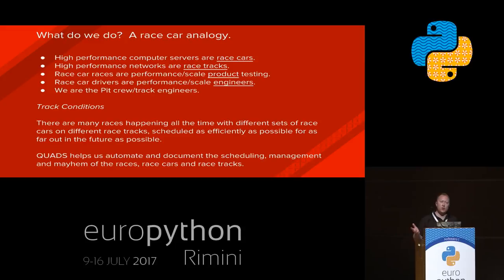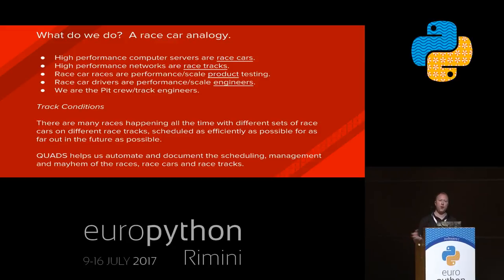This tool, Quads, helps us automate the entire thing, including writing our documentation for us, configuring VLANs on Juniper and Cisco switches, and the full lifecycle of provisioning bare metal servers — spinning them up, passing them to an engineering group for product and scale testing, and then spinning them down when they're done.